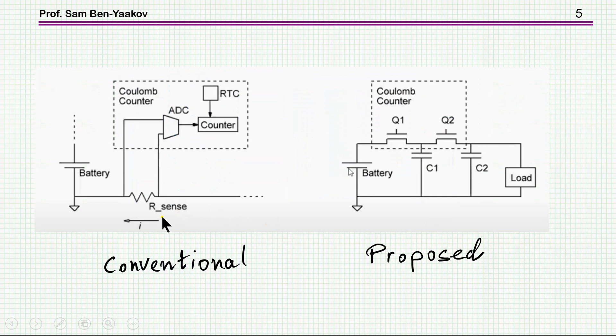So here it is. This is the conventional, so to speak, way of measuring state of charge, measuring the current and accumulating it to get the charge. And then, obviously, by that you know the state of charge if you know the starting point.